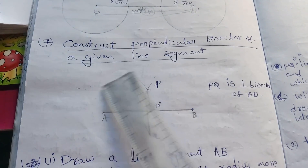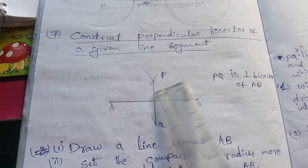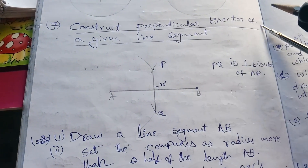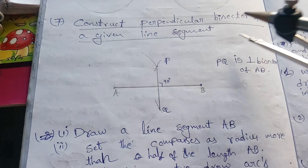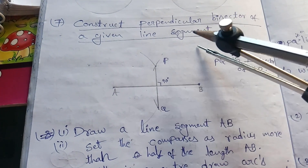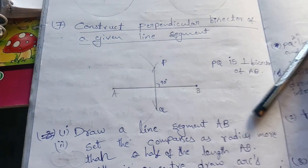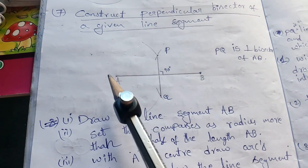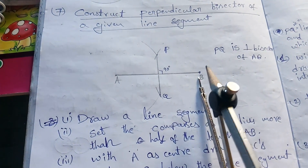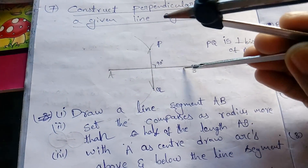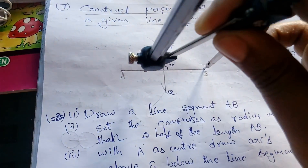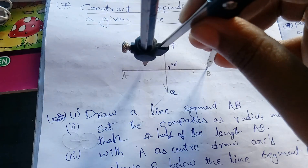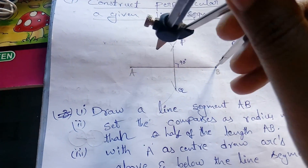We will construct a perpendicular bisector of a given line segment. In this type, the question may give a line segment of length seven centimeters or something like that, and ask us to draw the perpendicular bisector. First, we draw a line where the starting point is A and the ending point is B. We have to take a radius greater than half the length of AB.